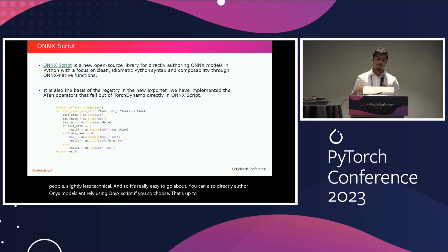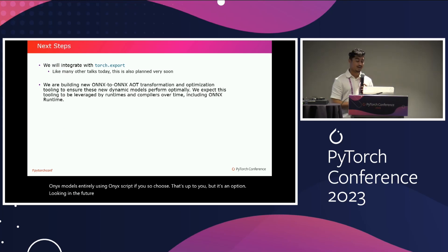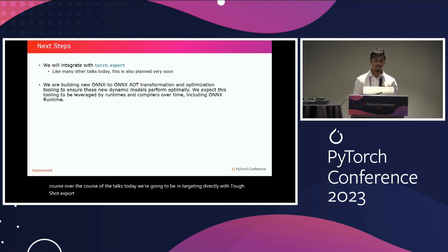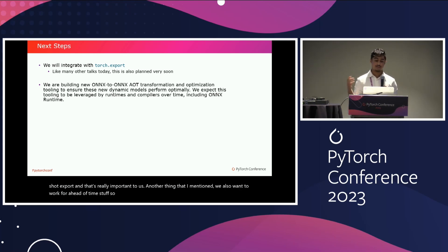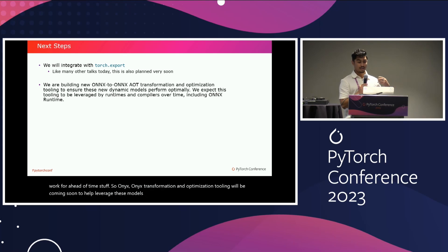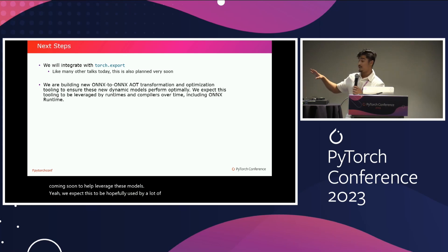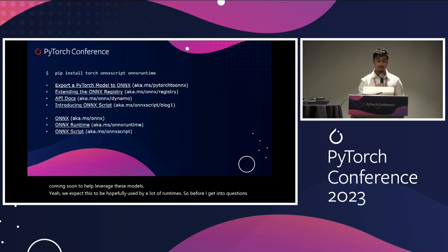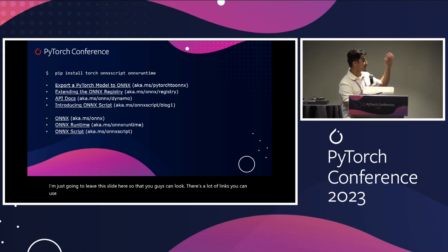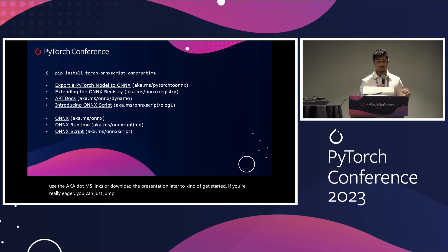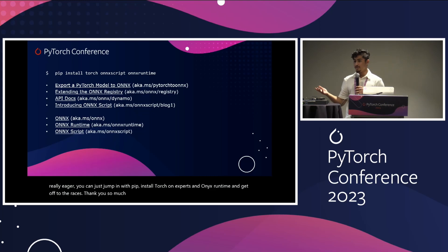Looking to the future — we're going to be integrating directly with Torch.export, which is really important to us. We also want to work on ahead-of-time stuff, so ONNX-to-ONNX transformation and optimization tooling will be coming soon to help leverage these models. We expect this to be used by a lot of runtimes. I'll leave this slide up so you can look at the links — you can use the aka.ms links or download the presentation later to get started. If you're eager, you can jump in with pip install torch-onnx-script and onnxruntime.